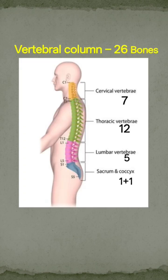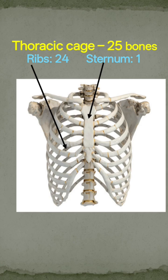The vertebral column has 26 bones. The vertebral column consists of the cervical, thoracic, lumbar, sacral, and coccygeal vertebrae. The thoracic cage has 25 bones — it is formed by 24 ribs and 1 sternum.